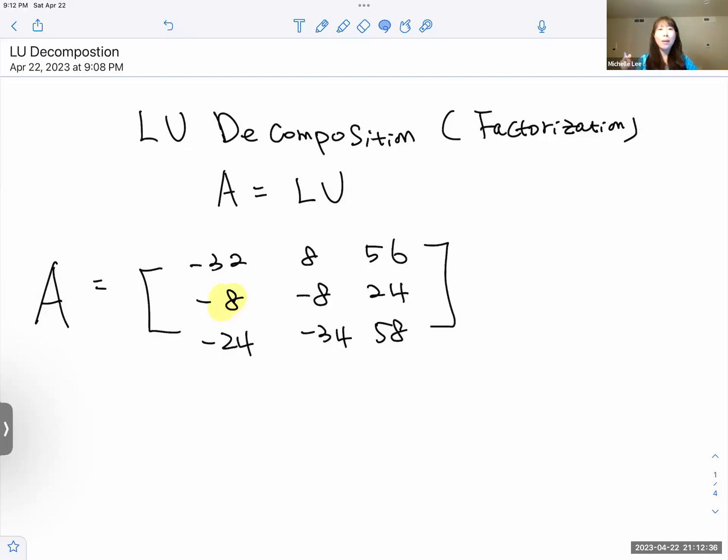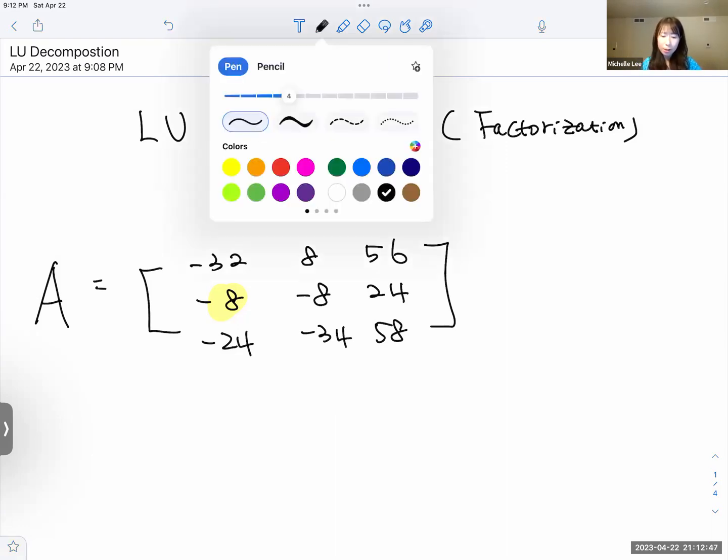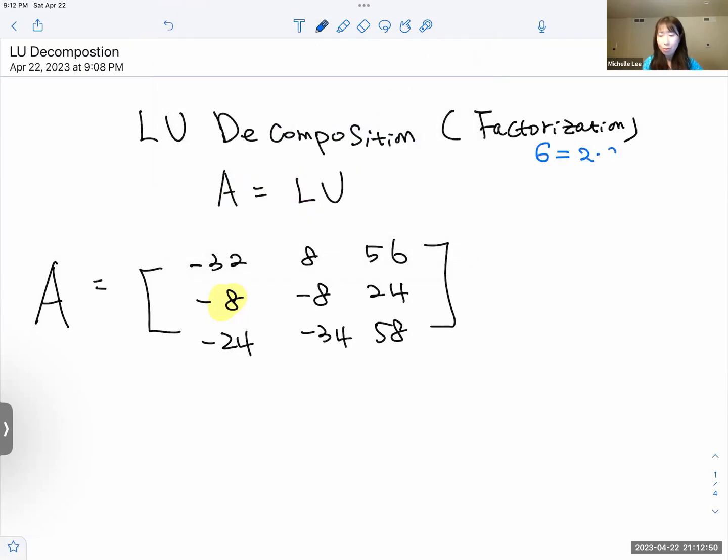Hello everyone. I'd like to talk about LU decomposition today, which is factorization. From previously, we know that factorization, which is 6 equal to 2 times 3. So we called 2 times 3, which is factorization. So here we have A equal to—basically we have matrix A, then we are looking for their factorization, which is LU. This is why there is name about LU decomposition or factorization.